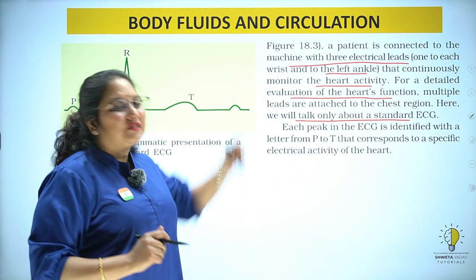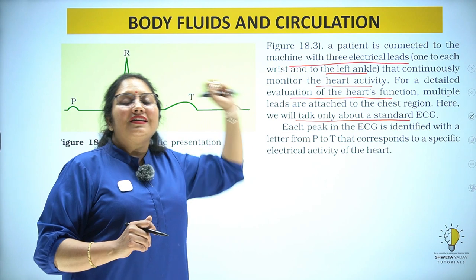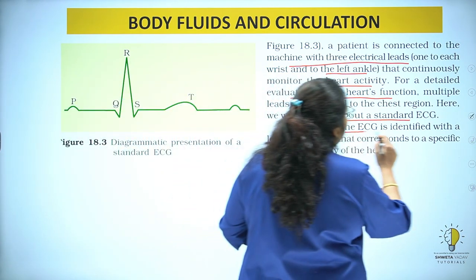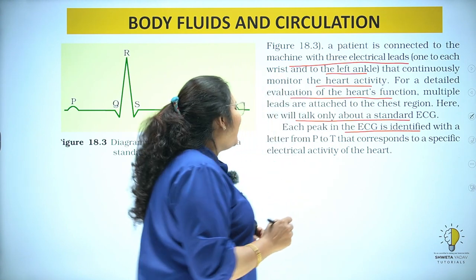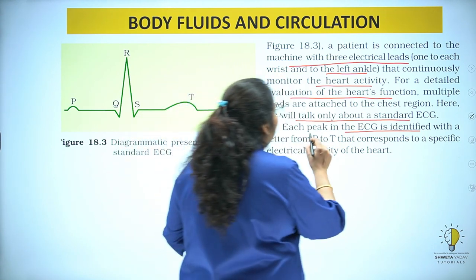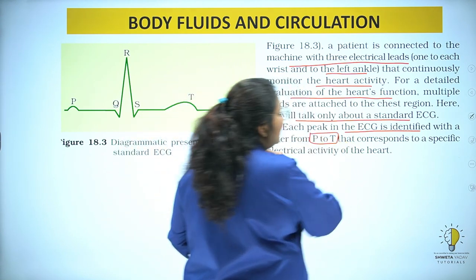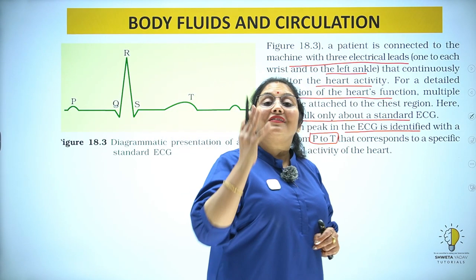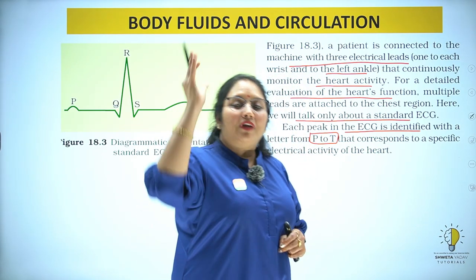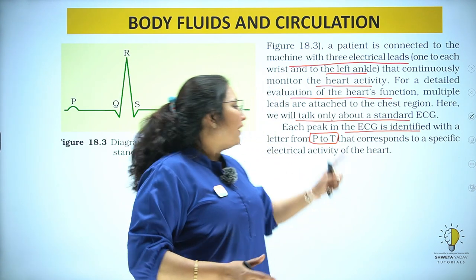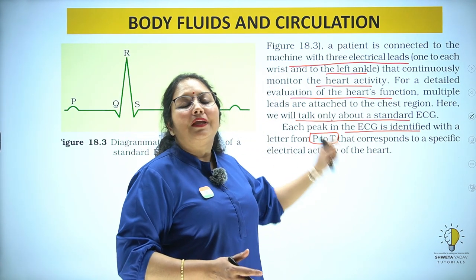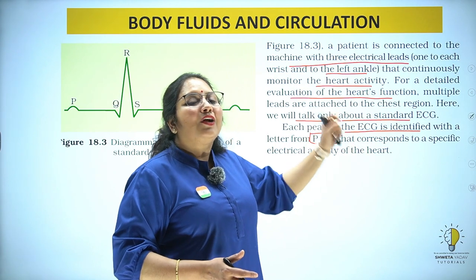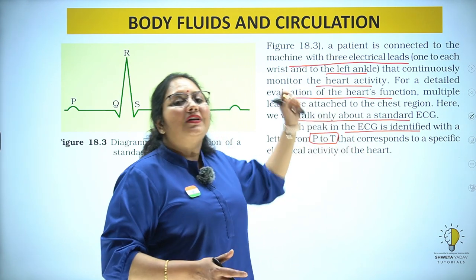We will talk only about a standard ECG. Each peak in the ECG is identified with a letter from P, Q, R, S, T. These letters start with P and end with T — P, Q, R, S, T — these are the alphabets used in ECG.